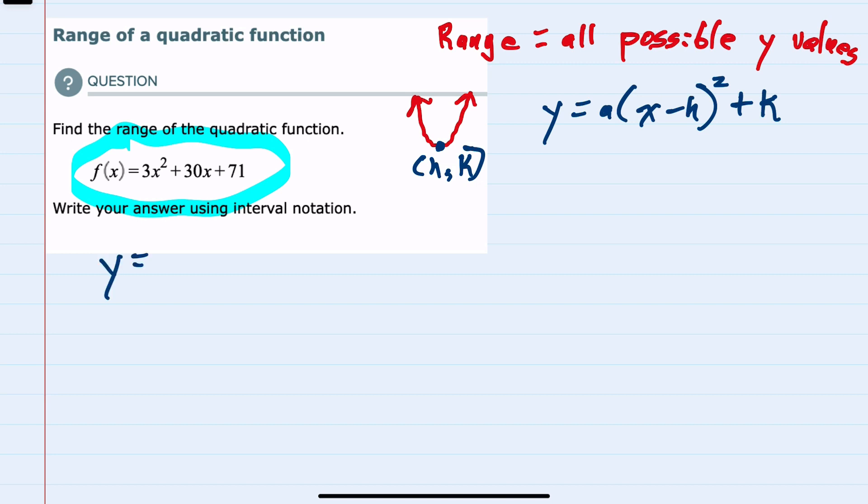I'll start by writing f(x) as just our y value. Then, since I'm going to have a coefficient outside of the x² portion, I'm going to factor the 3 out of these first two terms. That would leave me with an x² + 10x, and then the 71 I can leave on the outside.